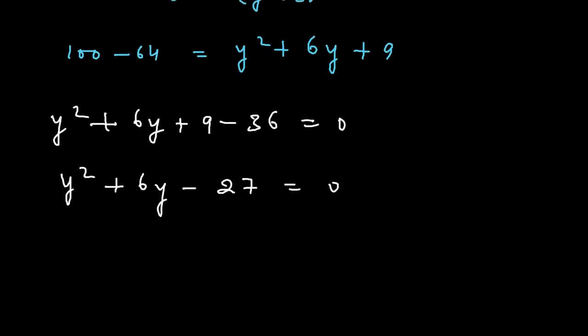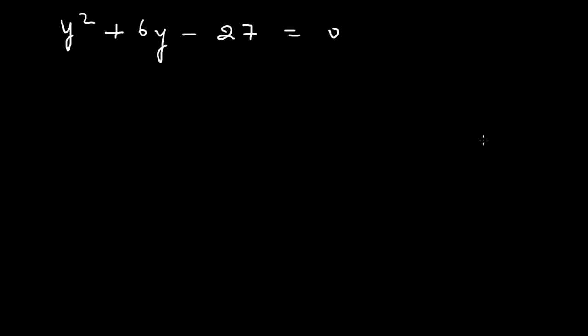This is a quadratic equation and we shall factorize this quadratic equation by using the factorization method. And here we shall split the middle term in such a way that the product of the factors of the middle term is equals to the product of Y squared and minus 27, and the sum is equals to plus 6Y.